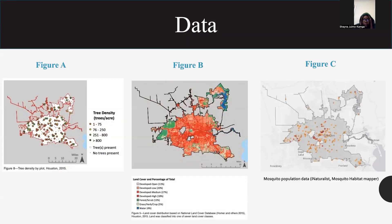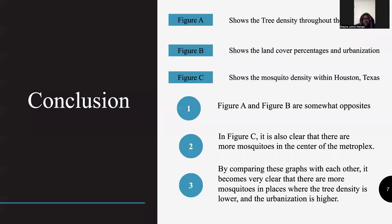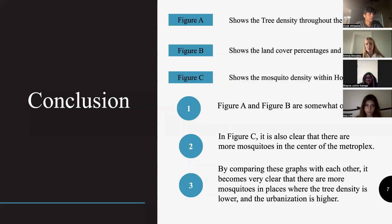The images presented above represent our quantified data of tree density shown in Figure A, land cover distribution shown in Figure B, and mosquito population data shown in Figure C. As shown, we have three maps of Houston, each representing different things. Figure A and Figure B, the maps of tree density and urbanization, are inversely related, which makes sense because in places where there's more urbanization and buildings, there's less space for these trees to grow.